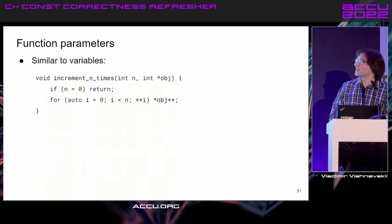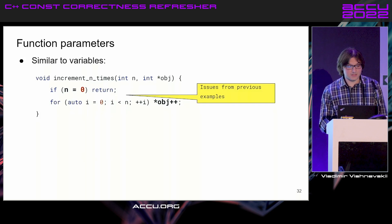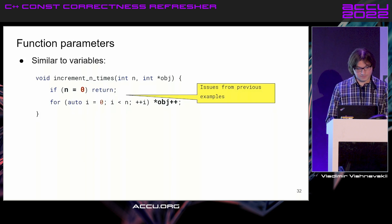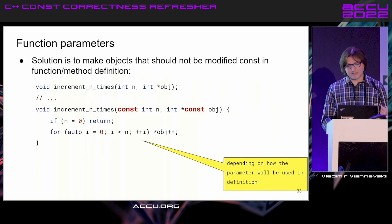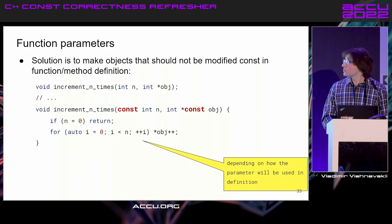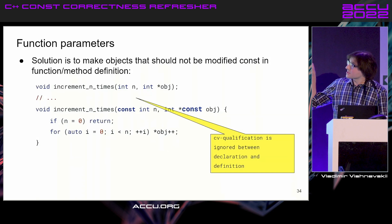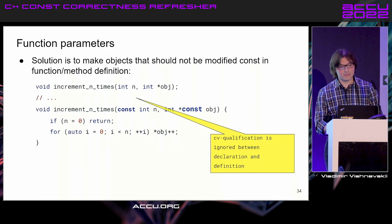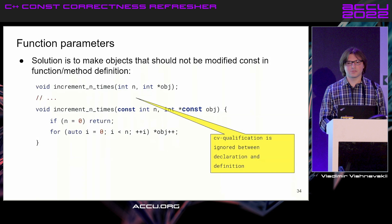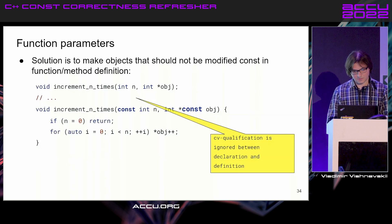For function parameters, the parameters internally within the function are basically variables vulnerable to the same problems. In the function definition, where we know how the parameter is supposed to be used, we can apply constness to ensure it is not modified if it shouldn't be. Importantly, this constness is not part of the function signature, so it can be dropped in the declaration. In the definition, depending on the implementation, it can be specified.